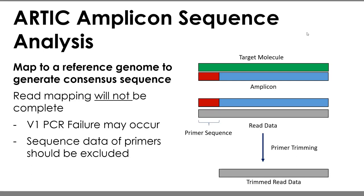When the PCR reaction happens, we have our target molecule and primer sets generating our amplicons. When we move to sequencing, we're sequencing the entirety of that amplicon, so our read data includes the primer sequence. While hybridization did occur between the primer and target molecule, some mutations may have occurred at that primer site. If you don't trim out that primer sequence, you're making an assumption that there has been no mutation at these primer sites. Best practice is to perform primer trimming so you have read data from your target molecule only. If using ARTIC V1, the primer sequences add up to around 5,000 base pairs of the 30,000 base pair genome.